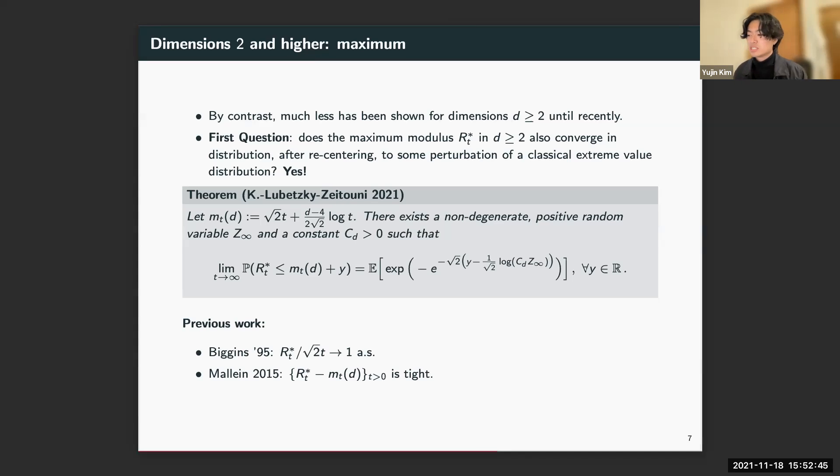This random shift is itself some limiting object. On the screen at the bottom, you see what was previously not known. In 1995, Biggins obtained the leading order term. In 2015, Mallein computed the correct centering term and showed that after recentering we have a tight sequence of random variables.